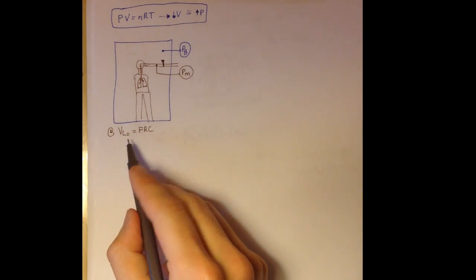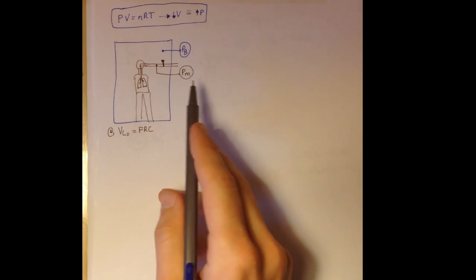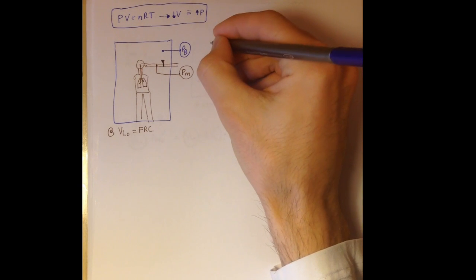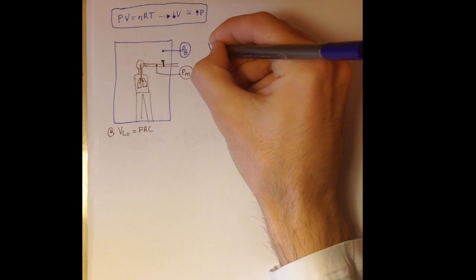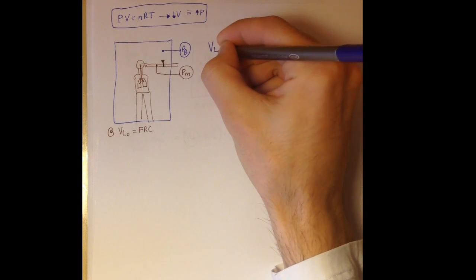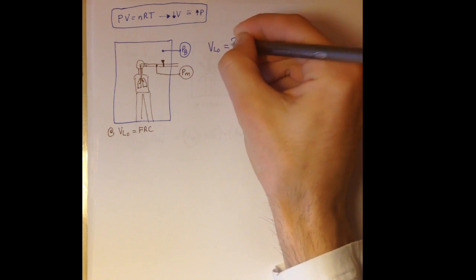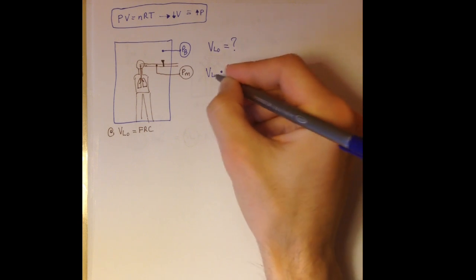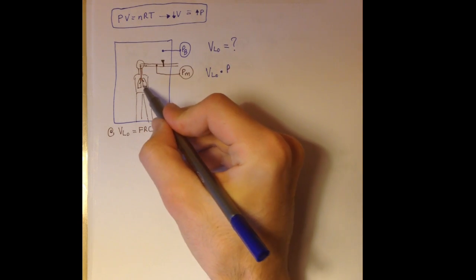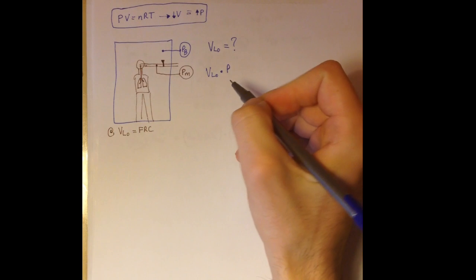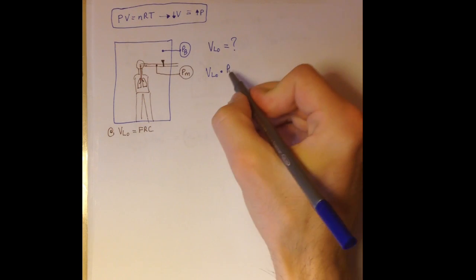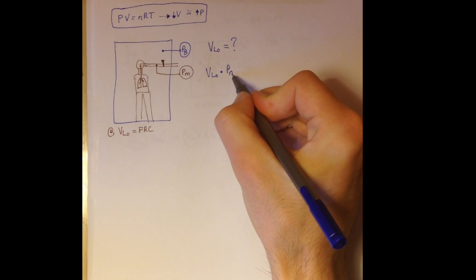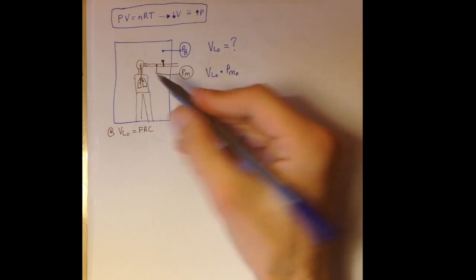How do you get from these pressures and these changes in pressure to the volume of the lung? You use the Boyle-Marriott law to find your unknown, which is Vl0. You know that Vl0 — the volume in the thorax at the beginning of the experiment, the functional residual capacity — multiplied by the pressure in the mouth at the beginning of the experiment, which is indicative of the pressure inside the lungs,